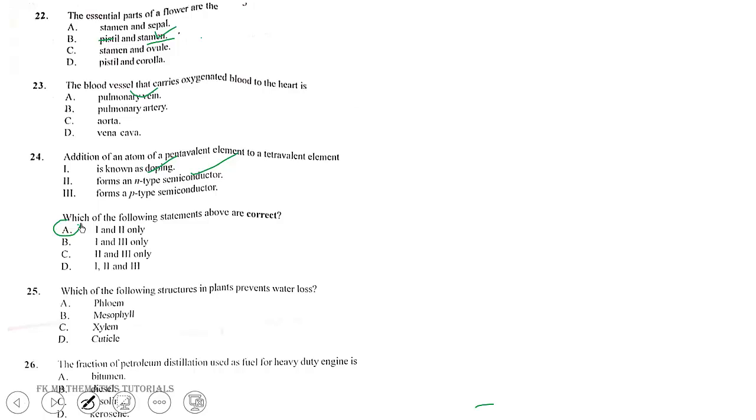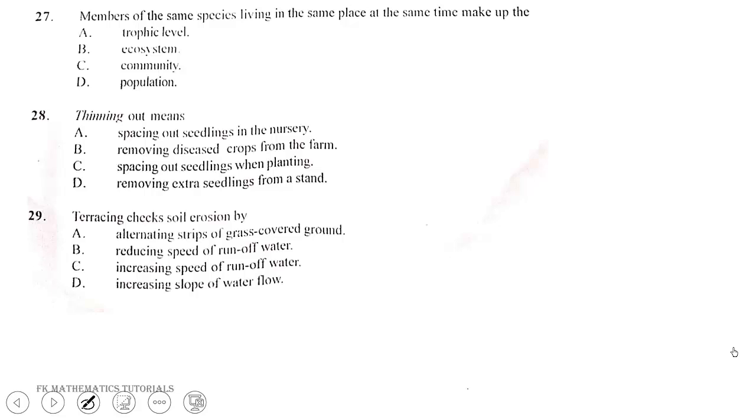Question 25. The structure in plant that prevents water loss is the cuticle. Question 26. A fraction of petroleum distillation used as fuel for heavy-duty engines is diesel. Question 27. Members of the same species living in the same place at the same time make up the population. The correct answer is D. Question 28. The ecosystem refers to one or more communities in an area and the abiotic factors such as water, sunlight, oxygen, temperature, and soil. The community has to do with the living components of the ecosystem where different plants, animals, and other organisms interact.